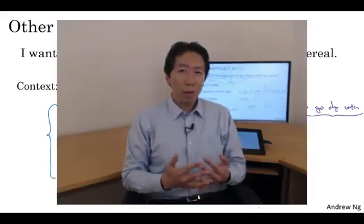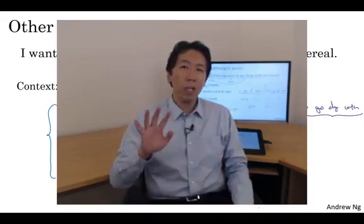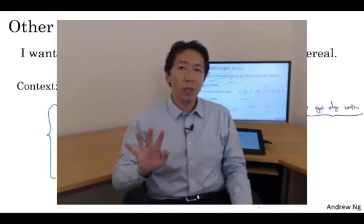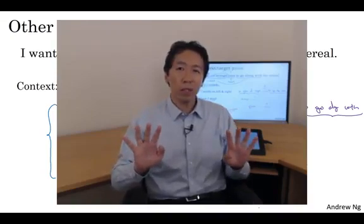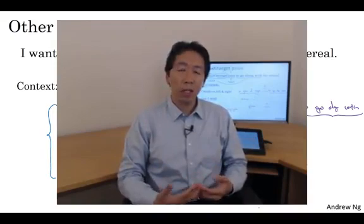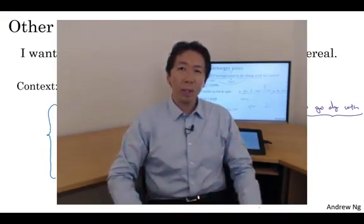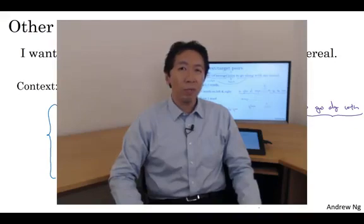To summarize, in this video, you saw how the language modeling problem, which causes you to pose the machine learning problem where you input the context, like the last four words, and predict some target words, how posing that problem allows you to learn a good word embedding. In the next video, you'll see how using even simpler contexts and even simpler learning algorithms to map from context to target word can also allow you to learn a good word embedding. Let's go on to the next video where we'll discuss the word2vec model.